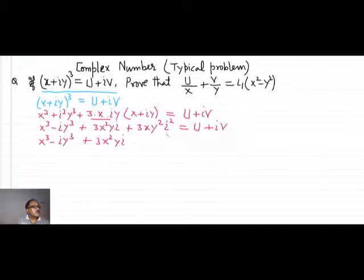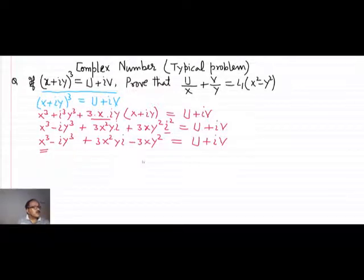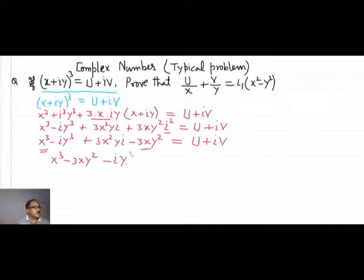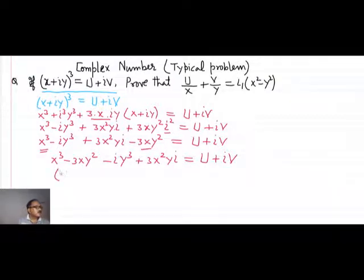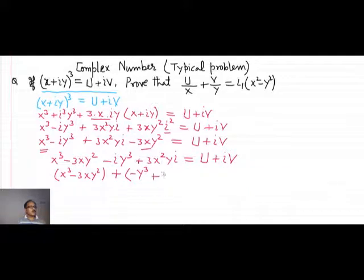The value of i² is equal to minus 1, so the sign changes: we get minus 3xy². Now grouping, the expression becomes x³ minus 3xy² plus i(minus y³ plus 3x²y) equals u plus iv, where the right-hand side remains u plus iv with no change.